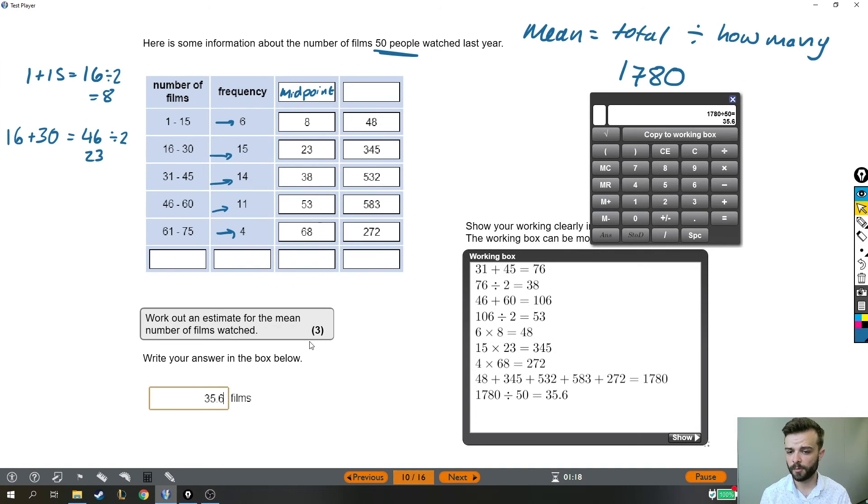So, beast of a question. Only worth three marks, which is quite harsh for all that work we had to do. But one more quick thing to say, which is that the reason why it says here, work out an estimate for the mean, isn't because you're expected to round anything. So I didn't round this number to 600 or this number to 300. It's called an estimate because we don't actually know how many films these six people watched. It's an estimate because we just said, oh, well, let's just say they watched eight films each, because that's halfway between one and 15. And they all watched between one and 15. So it's only called an estimate because we don't actually know how many films they watched. We had to make a guess. And for each category, our guess for how many films they watched was the halfway point in each category.